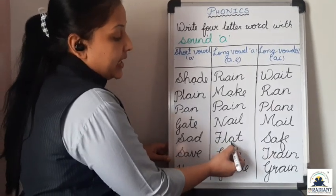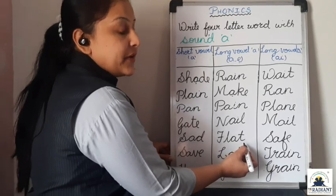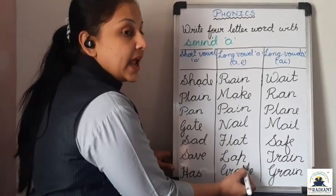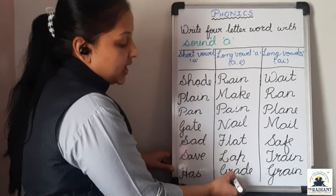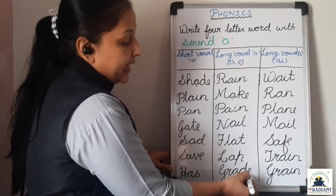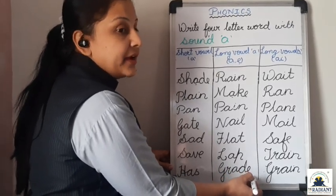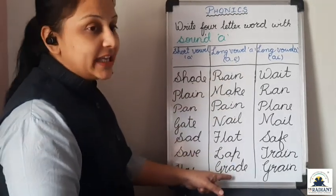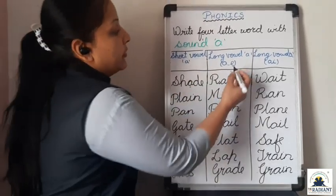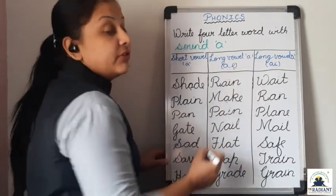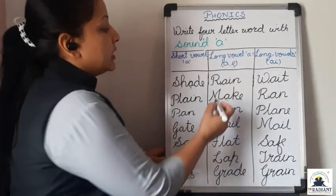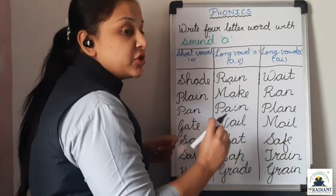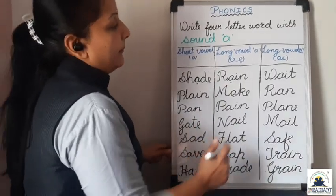F, L, A, T — Flat. L, A, P — Lab. G, R, A, D, E — Grade. Means here it is not E that is there, then also we have to add the sound of E. We have to stretch the sound of A and pronounce it that way.